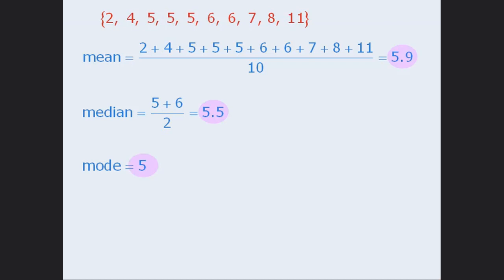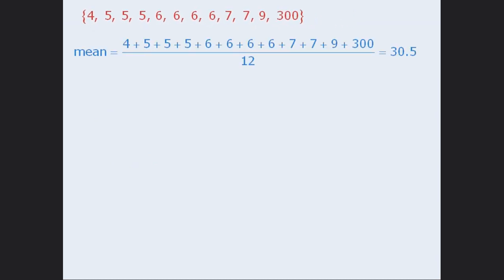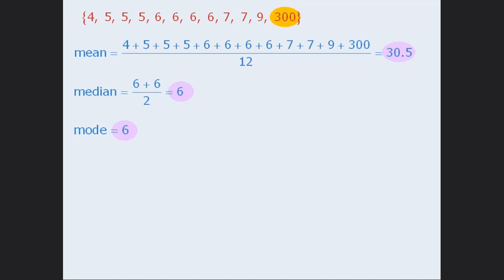As you can see, the mean, median, and mode all describe the set of numbers in a similar manner. Now notice what happens when we find the mean, median, and mode of these 12 numbers. The mean is 30.5, the median is 6, and the mode is 6. In this case, the mean is quite different from the median and mode. The reason is that the value 300 changed the mean calculations significantly. The mean of a set of numbers is greatly influenced by numbers that deviate considerably from the other numbers. Also notice that the 300 had no effect on the median and the mode.